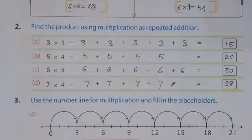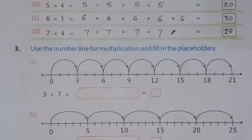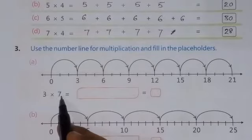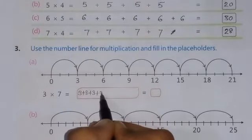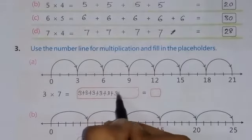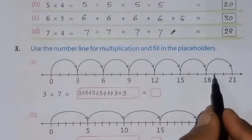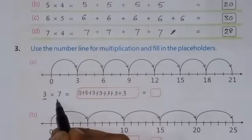See the next question number third. And question number third is given: Use the number line for multiplication and fill in the placeholders. So, here is number given, 3 into 7. What is the meaning of this? We have to write 3 seven times. So, 1, 2, 3, 4, 5, 6, 7. And, using this number line, we can find the answer. It means we have to jump of 3, 3 seven times.